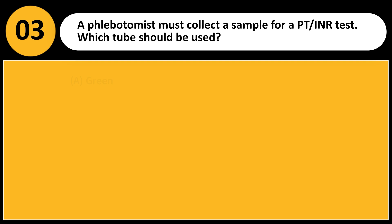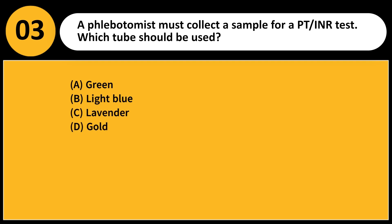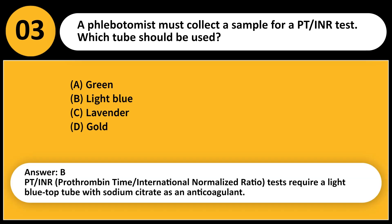A phlebotomist must collect a sample for a PT/INR test. Which tube should be used? A. Green. B. Light blue. C. Lavender. D. Gold. Answer: B. PT/INR (prothrombin time/international normalized ratio) tests require a light blue top tube with sodium citrate as an anticoagulant.